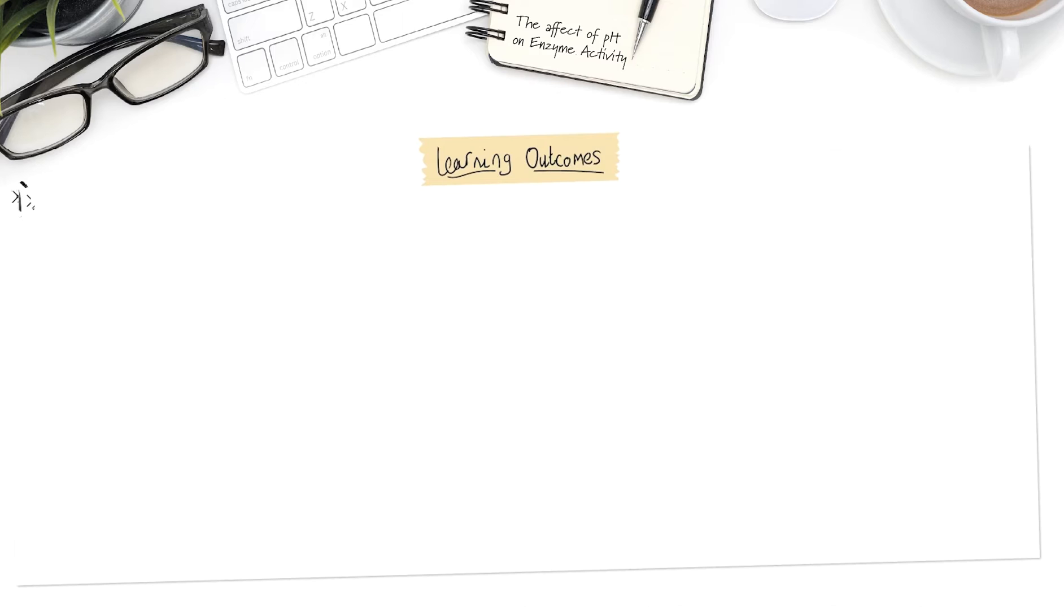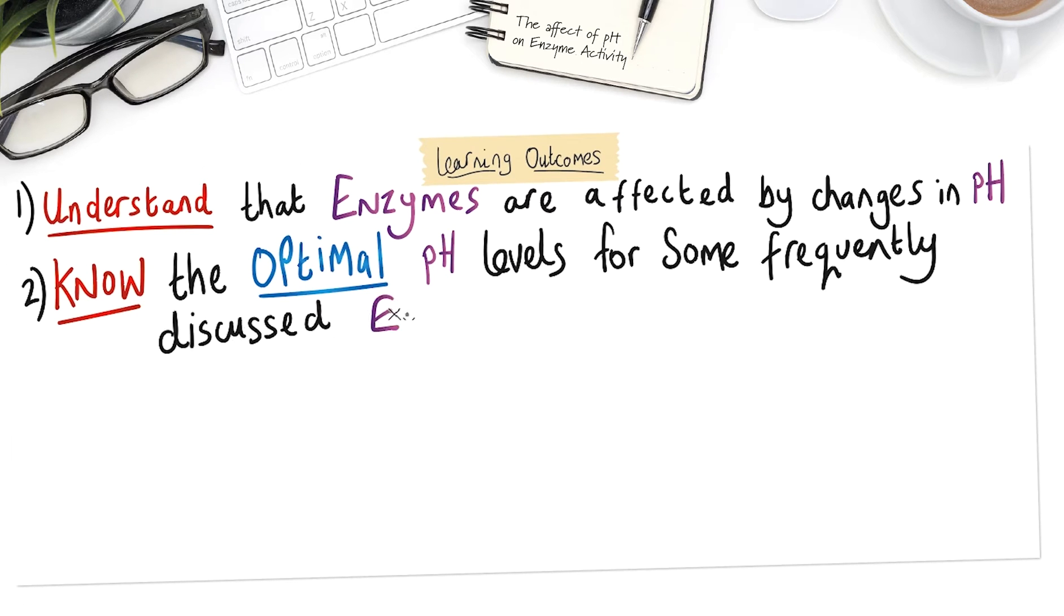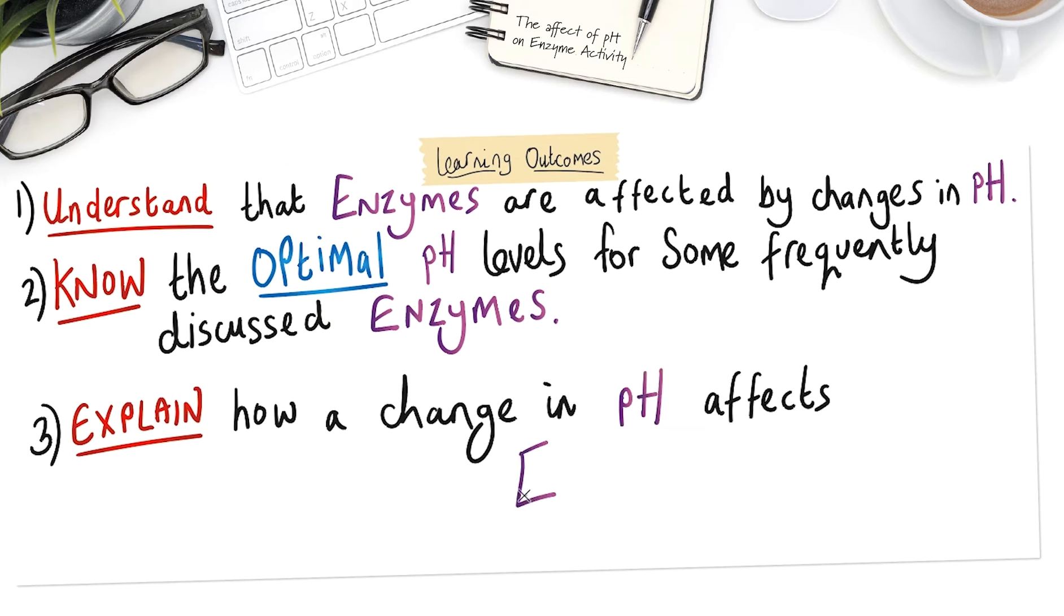Your learning outcomes this lesson are number one, understand that enzymes are affected by changes in pH. Number two, know the optimal pH levels for some frequently discussed enzymes. And number three, explain how a change in pH affects enzyme activity.